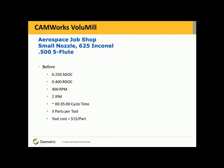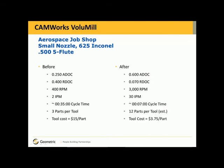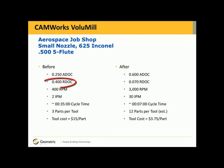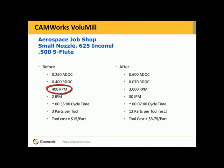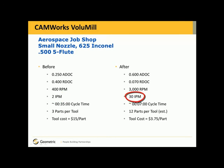Let's look at some examples. This is an aerospace job shop using 625 Inconel with a half-inch 5-flute end mill — before and after. Before: a quarter-inch axial depth of cut, with a radial depth of cut of four hundred thousandths. After with Volume Mill: six hundred thousandths axial depth of cut, but the radial depth of cut is set at only seventy thousandths. Your RPM has increased from four hundred RPM to three thousand RPM, and inches per minute went from two inches per minute to thirty inches per minute with Volume Mill.